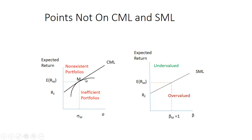Returning to the capital market line: portfolios below the line are inefficient — for the same level of risk, you could achieve a higher expected return, so there's no reason to hold them. Portfolios above the capital market line don't exist. If one did, you could draw a line from the risk-free rate to that portfolio and get a steeper line — a higher Sharpe ratio and better risk-return trade-off — but those opportunities don't exist.